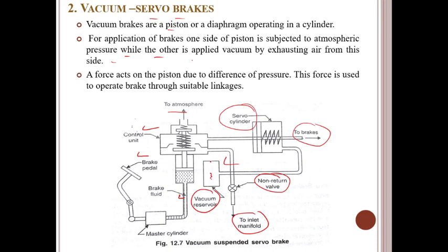In the first type, both sides of the piston are exposed to the atmosphere in the brake release position. For applying the brakes, engine vacuum is applied on one side of the piston, creating a differential pressure and operating the linkage. In the second type, both sides of the piston are subjected to engine vacuum in the brake release position. To apply the brakes, one side is exposed to atmosphere, which provides the desired force on the piston. The second system is called the suspended vacuum system and is preferred over the first.